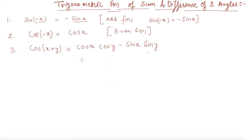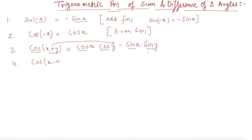How to remember this formula: when there is cos(x+y), the sign is reversed. The first two functions are in terms of cosine and the last two in terms of sine. The next formula is cos(x-y), which is the same but only the sign changes: cos(x)cos(y) + sin(x)sin(y).